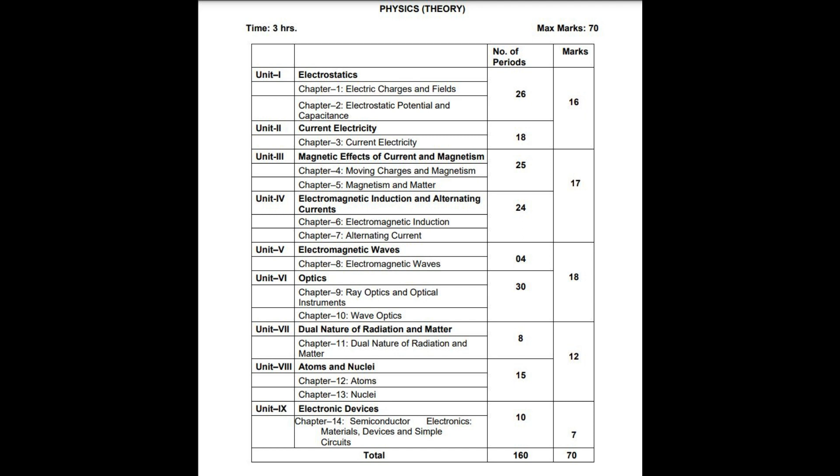Unit 5 covers electromagnetic waves and Unit 6 covers optics — ray optics, optical instruments, and wave optics. Units 5 and 6 together carry 18 marks. Concept-wise, this part is easier for students, so we need to focus on this part.